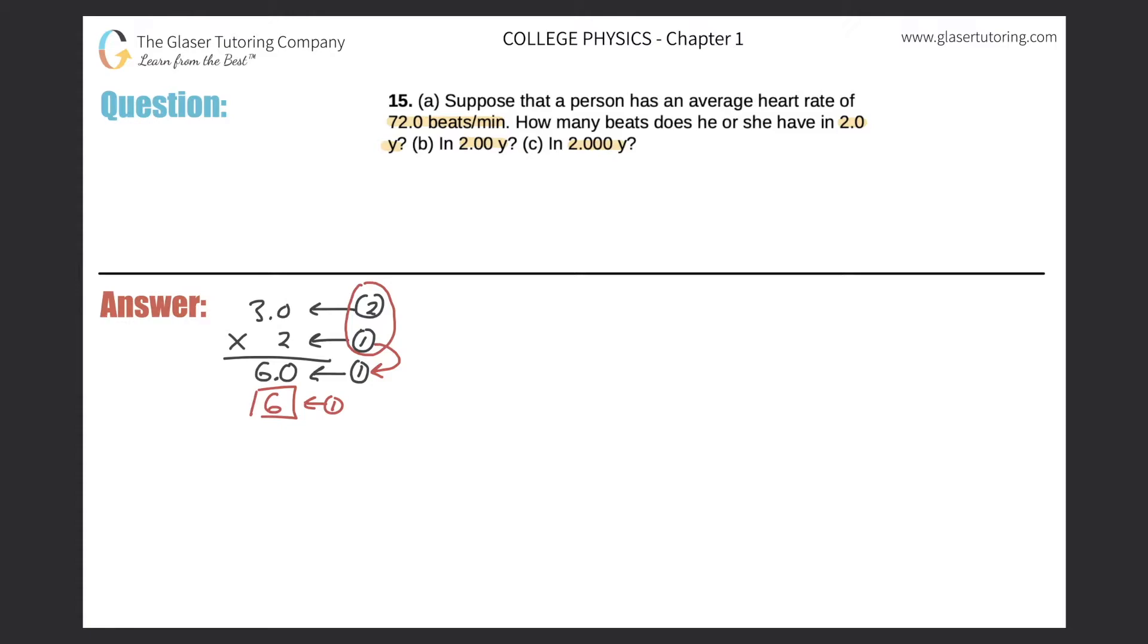So this is the logic that we're going to need in order to approach this problem. Let's go back and see what we're given. We want to find out how many beats does the person have in 2.0 years if they have a heart rate of 72.0 beats per minute.